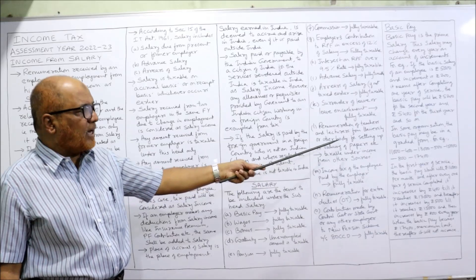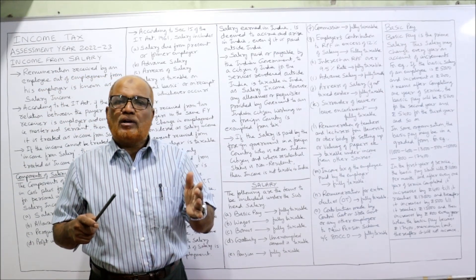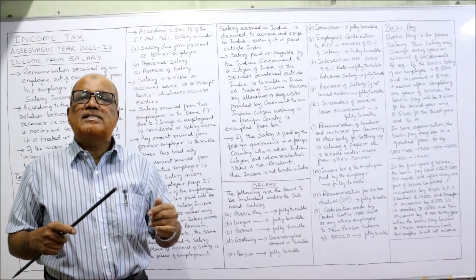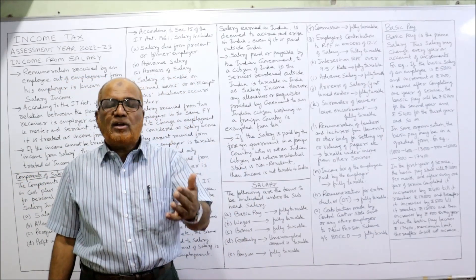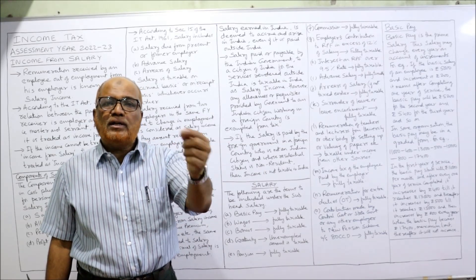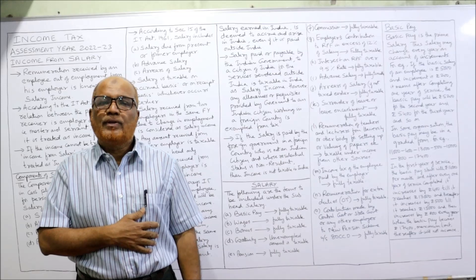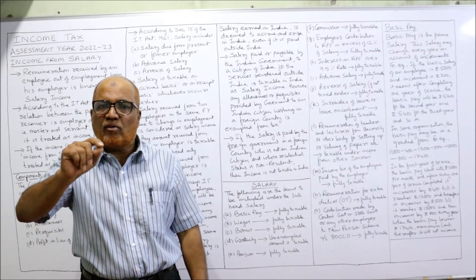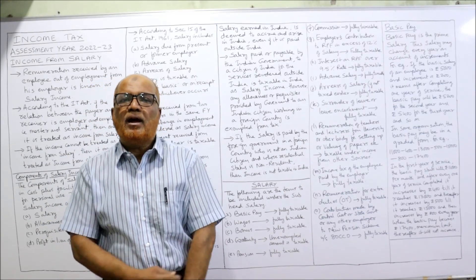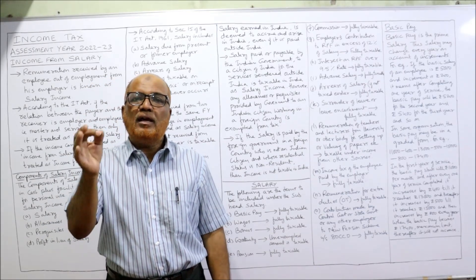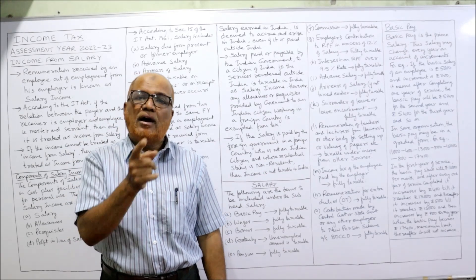Remuneration of teachers and lecturers from a university or other body for setting question papers or valuing answer scripts is taxable under income from other sources — not under salary. The monthly salary of teachers and lecturers is fully taxable under the head salary. But for extra contract work — making question papers or valuing answer scripts — some amount is paid separately. The Income Tax Act says that amount is not taxable under salary; it is taxable under income from other sources.